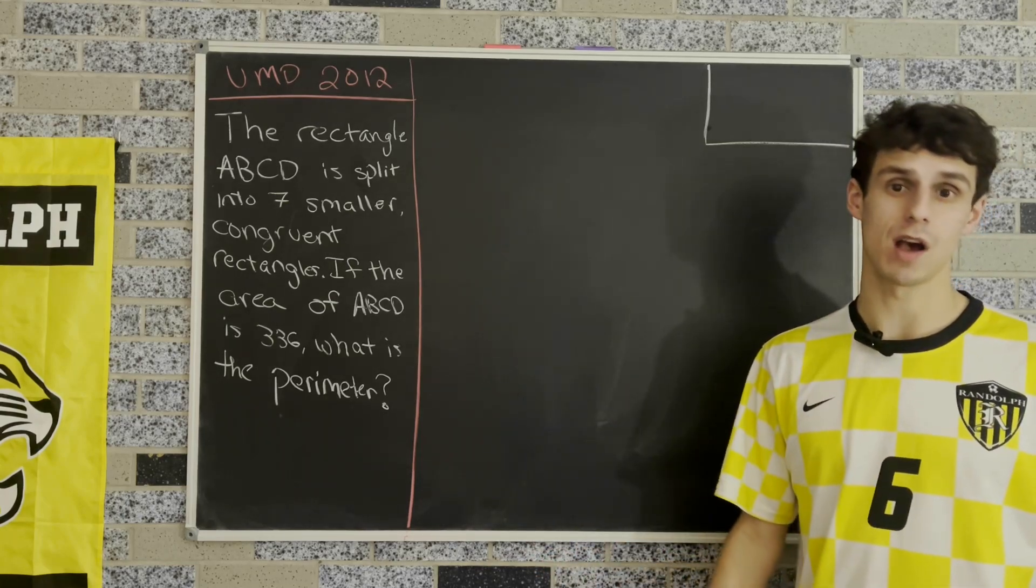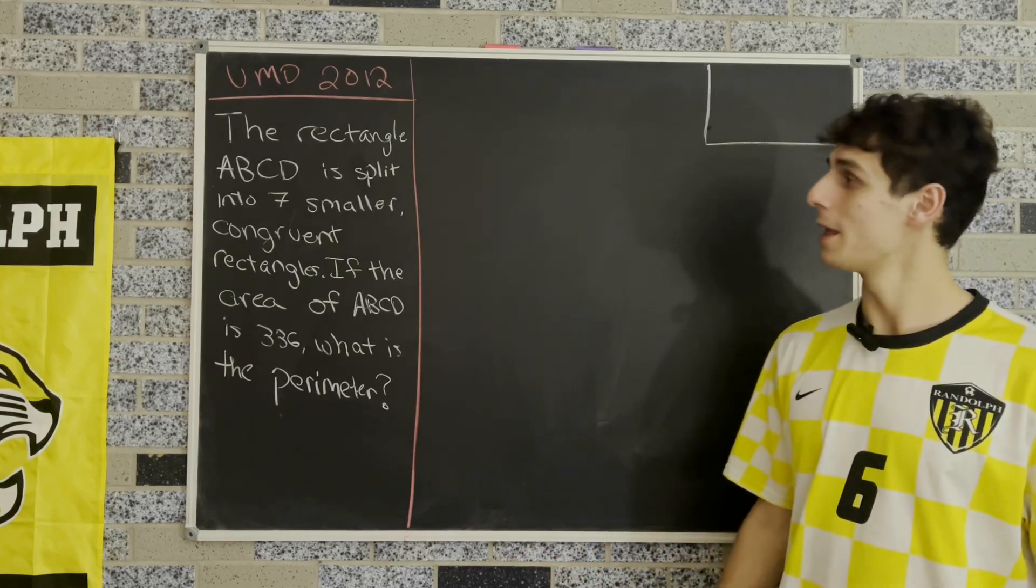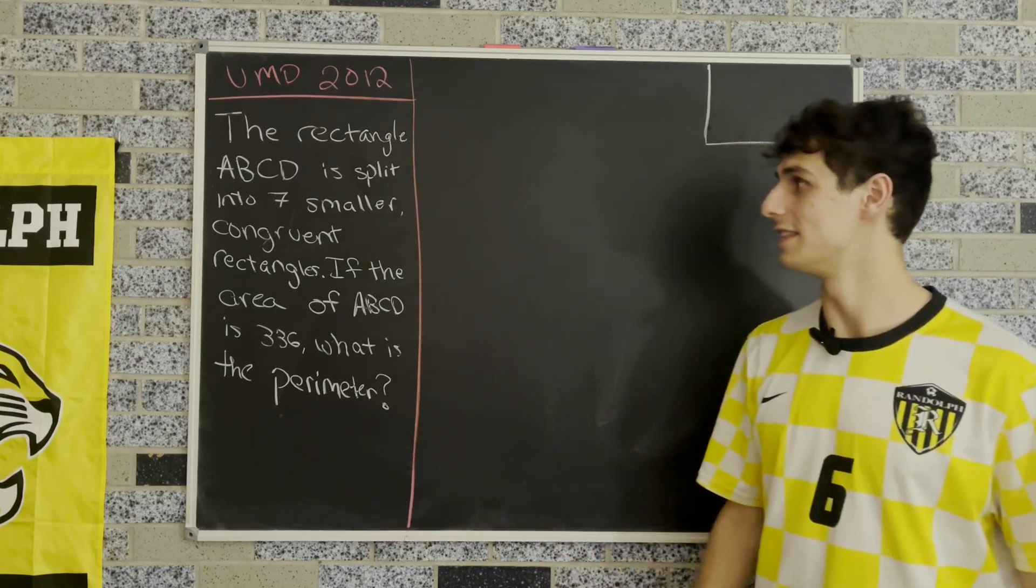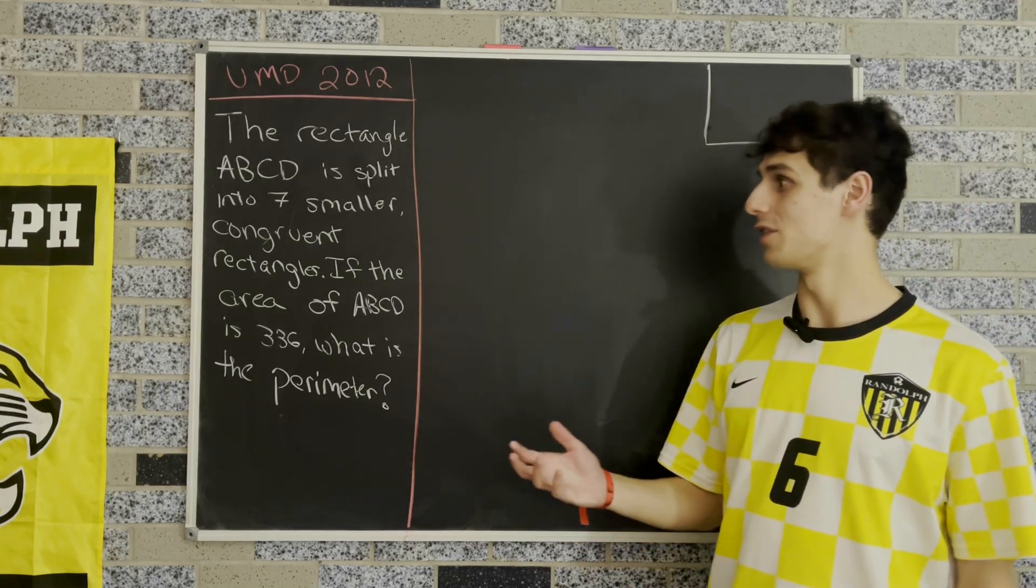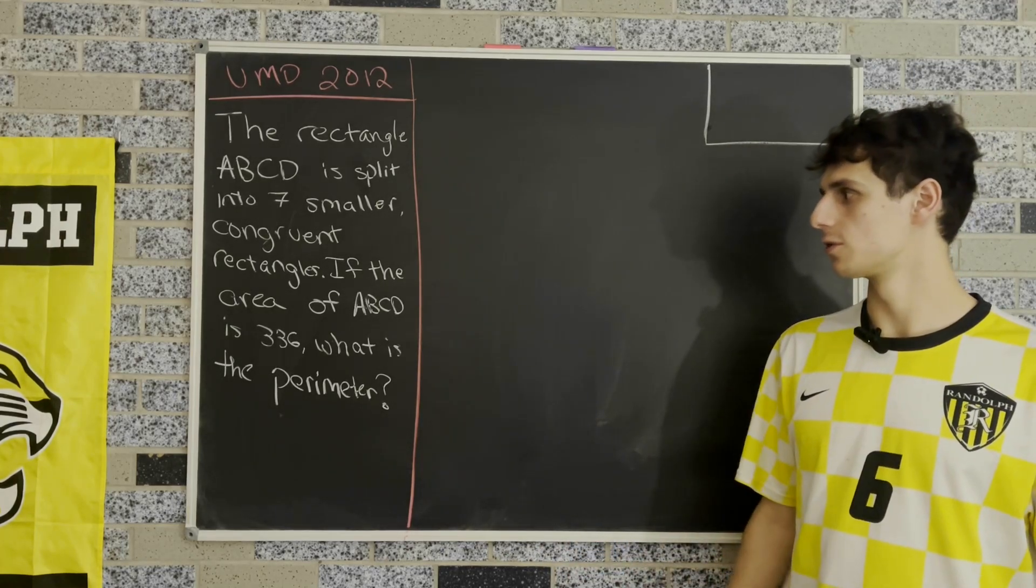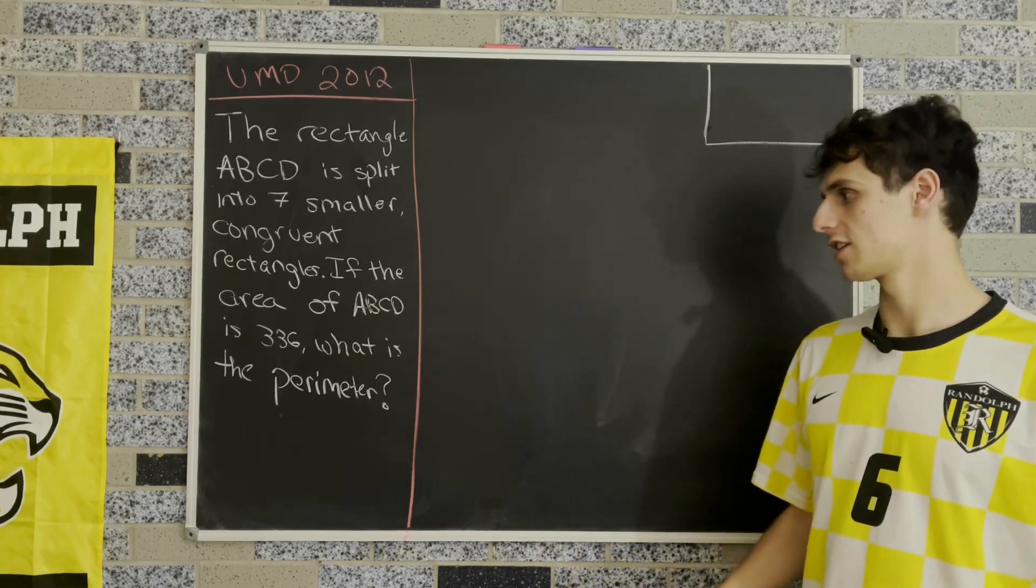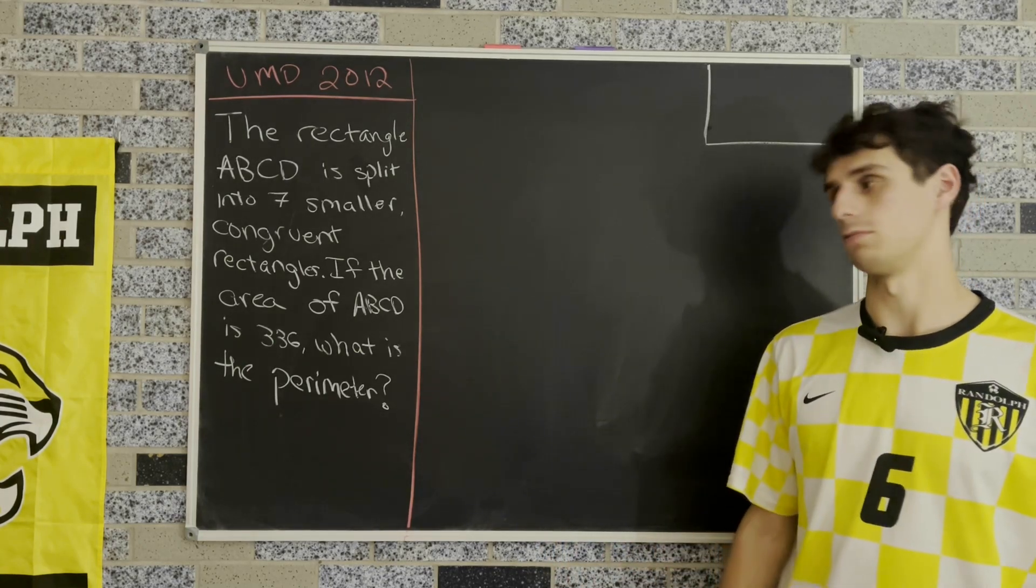Here we have a problem from the University of Maryland math competition in 2012. It tells us that the rectangle ABCD is split into seven smaller congruent rectangles. If the area of ABCD is 336, it asks us to find the perimeter.